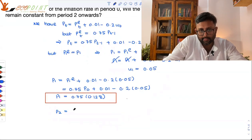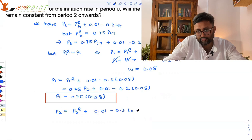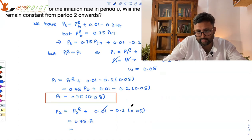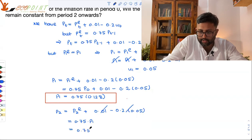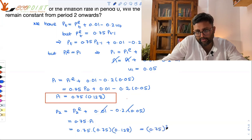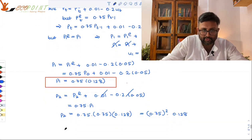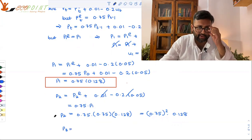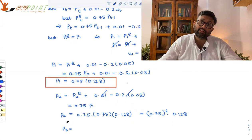P2 equals P2E plus 0.01 minus 0.2 into 0.05. Again these terms cancel. P2E equals 0.75 into P1. So P2 equals 0.75 into P1, and P1 was 0.75 into 0.128. So basically, P2 equals 0.75 squared into 0.128.